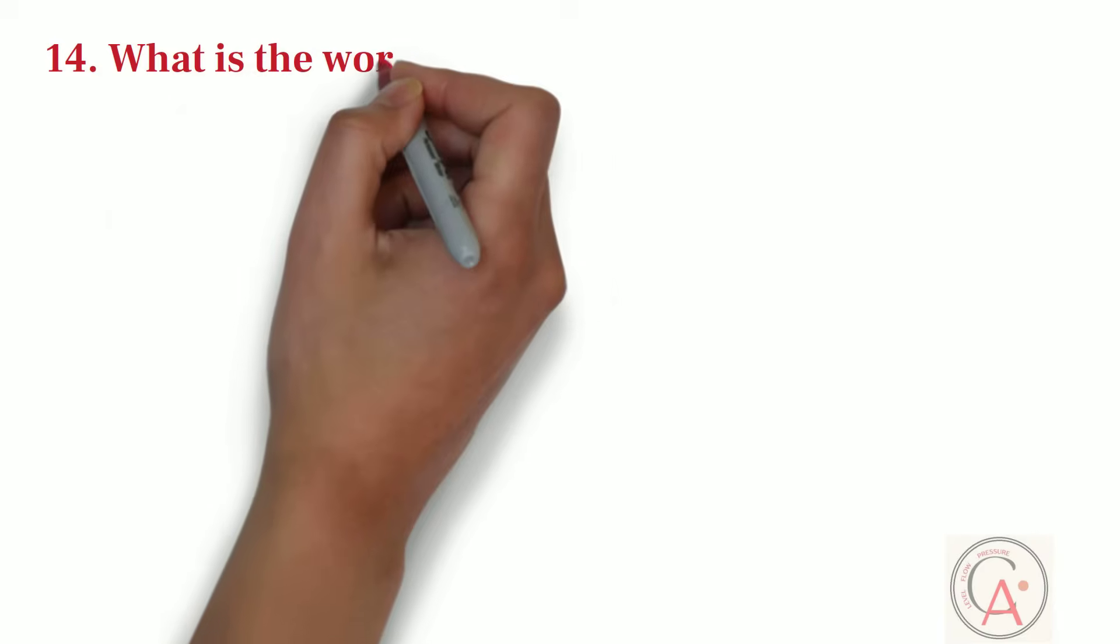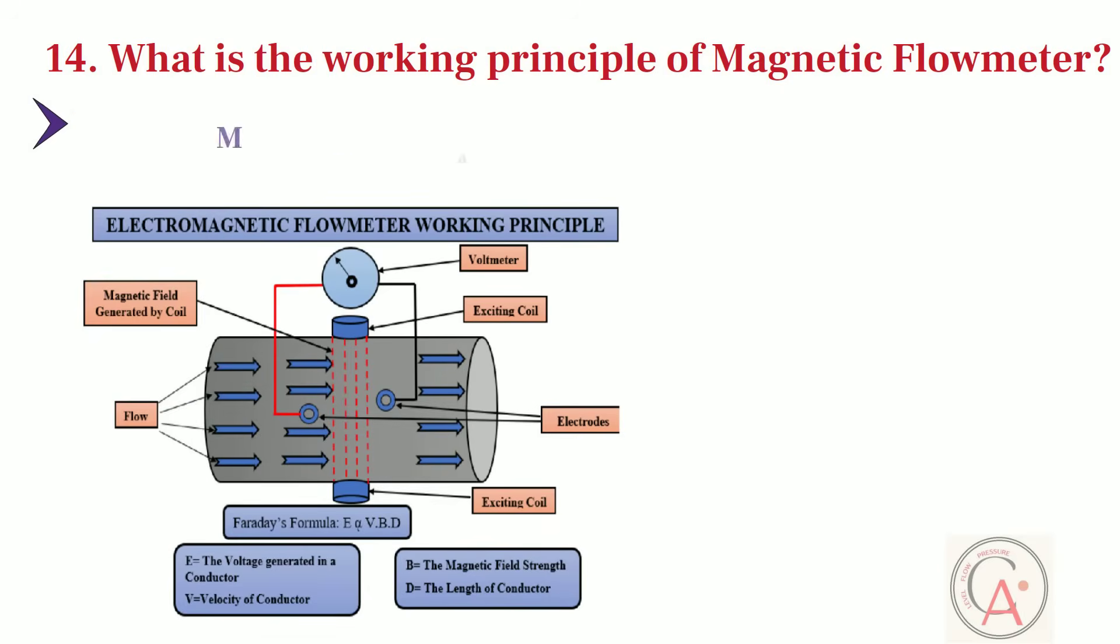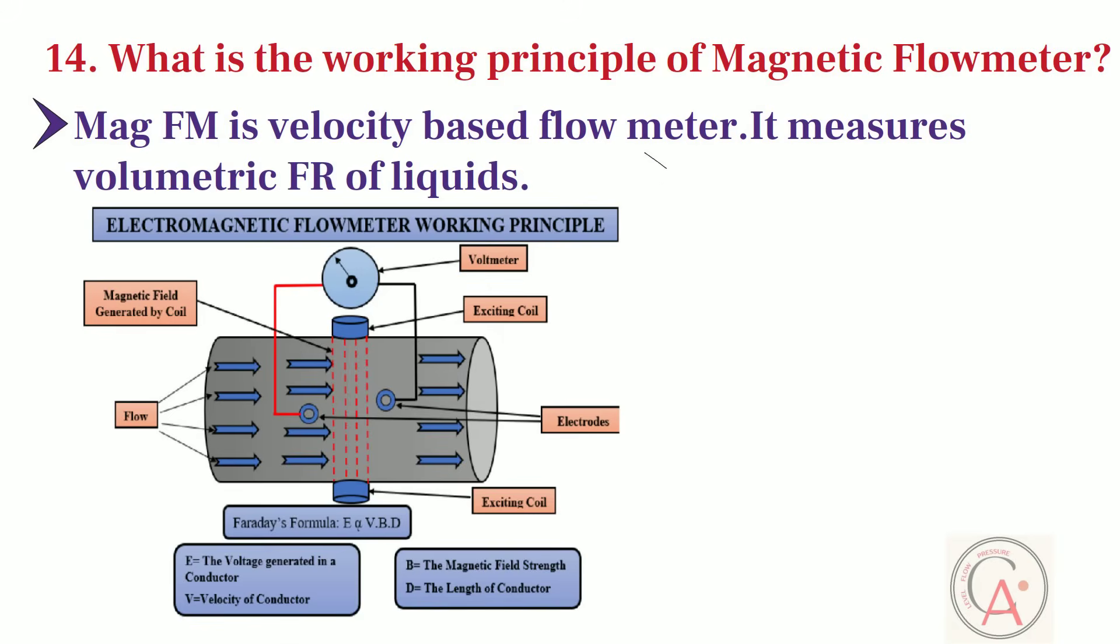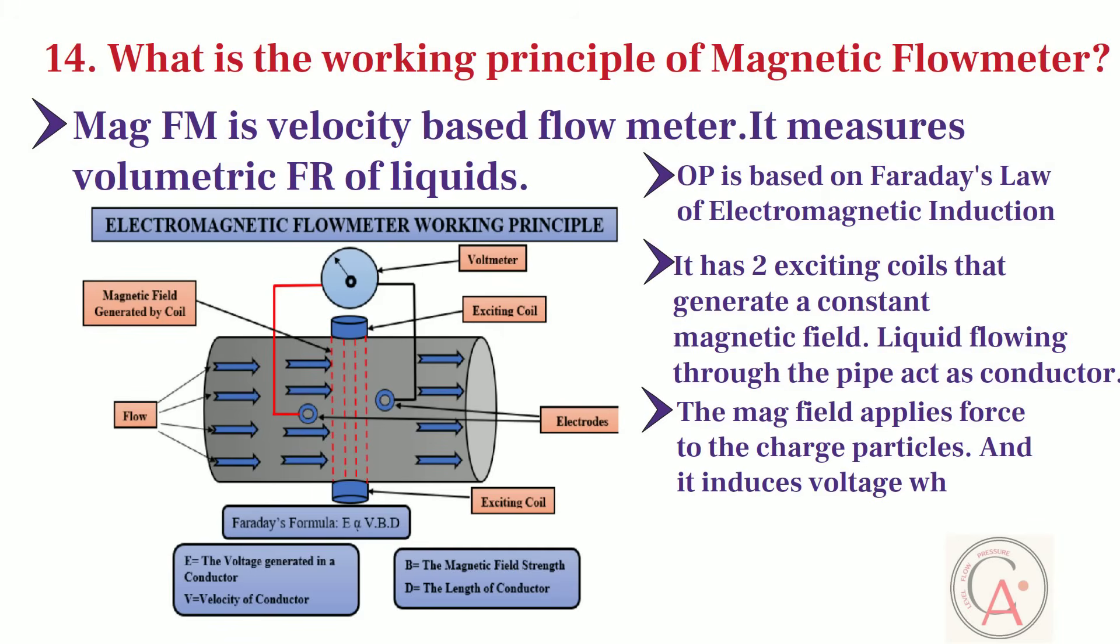Next question is, what is the working principle of magnetic flowmeter? Electromagnetic flowmeter is velocity-based flow meter, and it measures volumetric flow rate of liquids. Magnetic flowmeter's operating principle is based on Faraday's law of electromagnetic induction. Mag flowmeter has two exciting coils that generate a constant magnetic field, and liquid flowing through the pipe act as conductor. When conductive liquid such as water flows through the pipe or tube, the magnetic field applies force to the charge particles, which induces voltage which is detected by two sensing electrodes mounted in mag flow meter body.